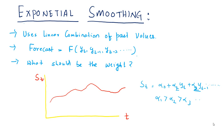Hi, in this video I am going to talk about a forecasting technique known as exponential smoothing. Exponential smoothing is a kind of forecasting technique which uses the linear combination of the past values of the series.